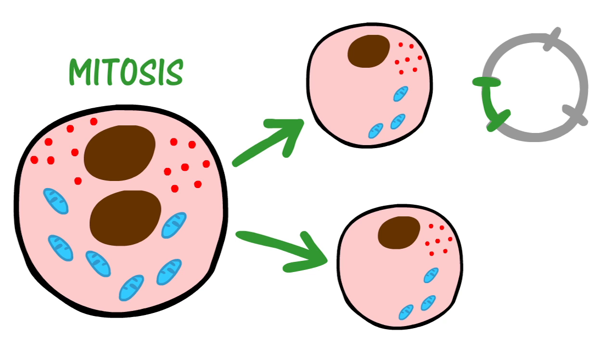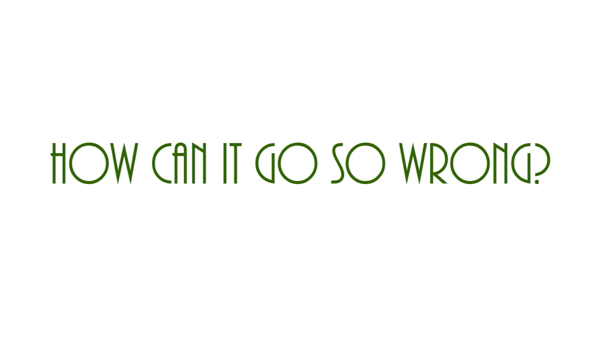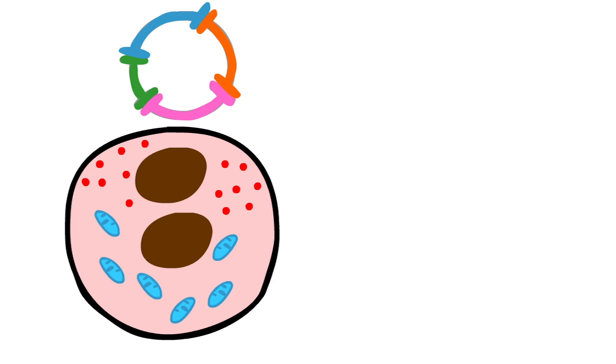As you can see, every decision your cell makes is scrutinized. So how can it go so wrong? If a cell eagerly begins a phase in the hope of getting bigger and ultimately cloning itself, at the end of this phase, it will be faced with a judgement of whether to continue the process or not.